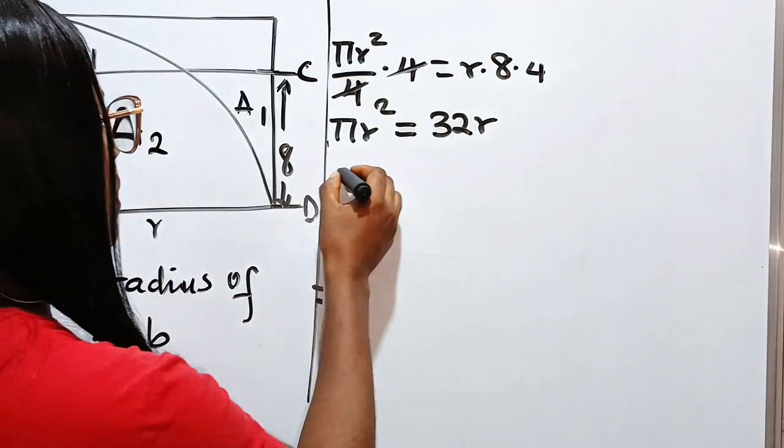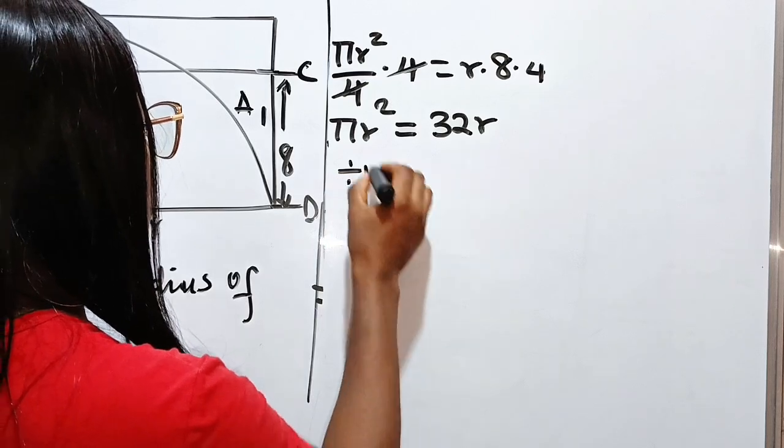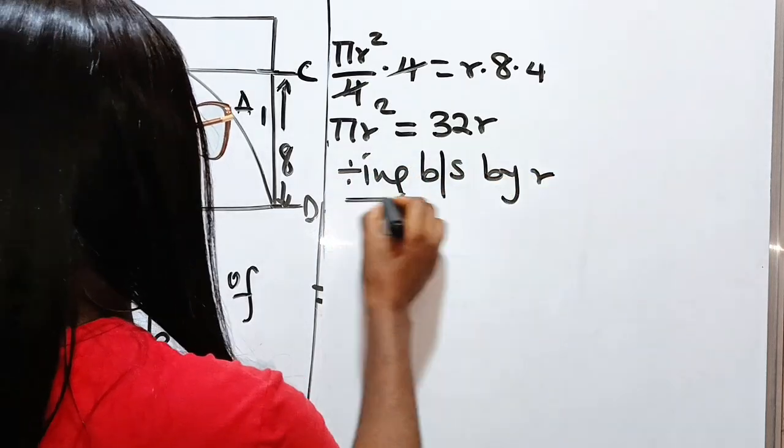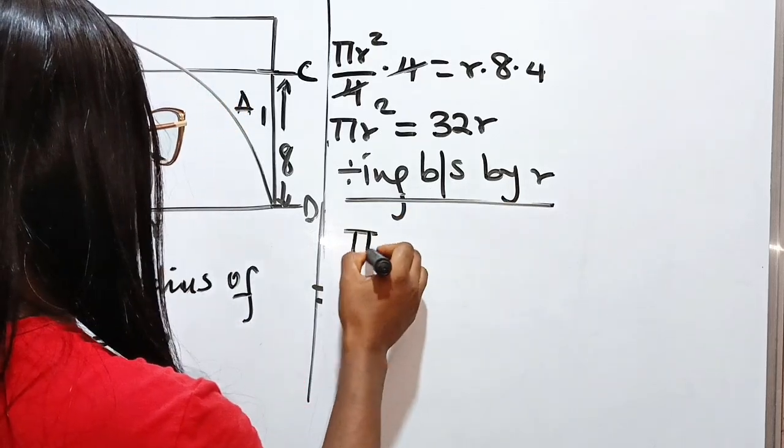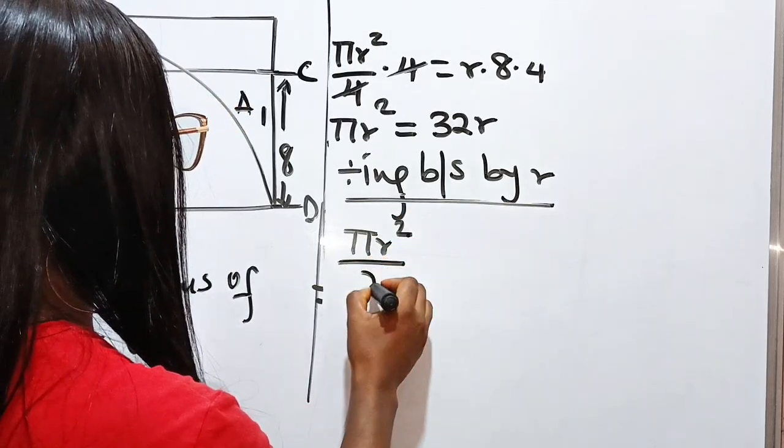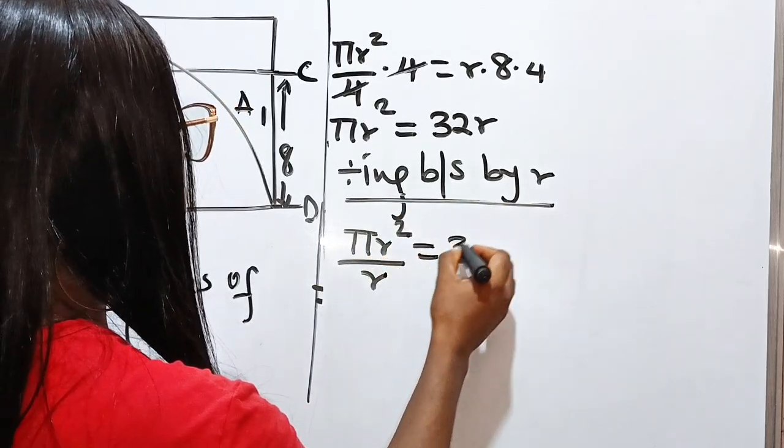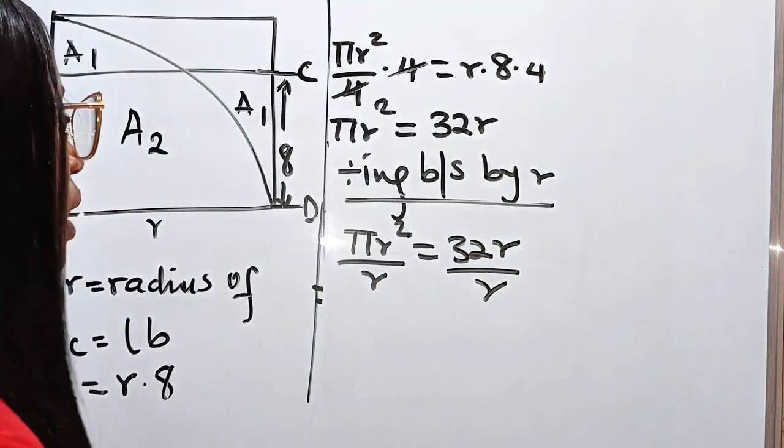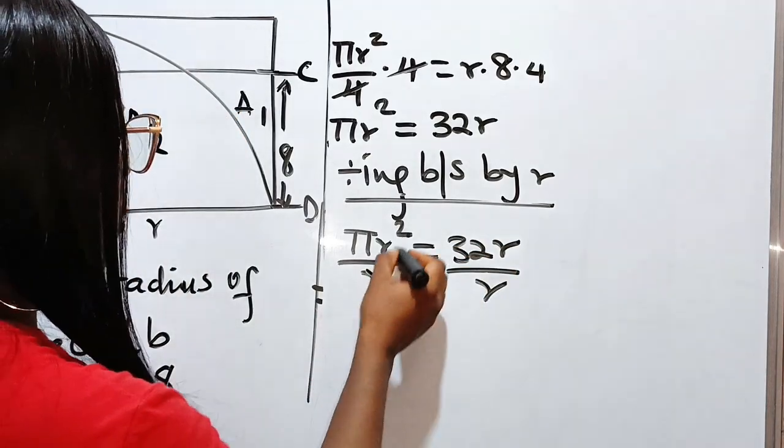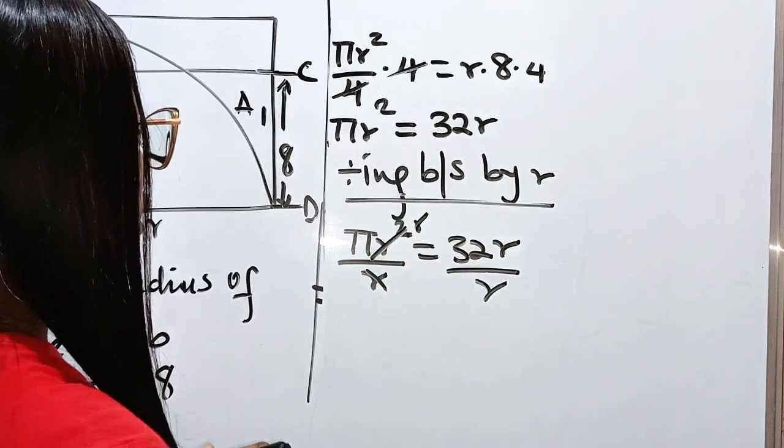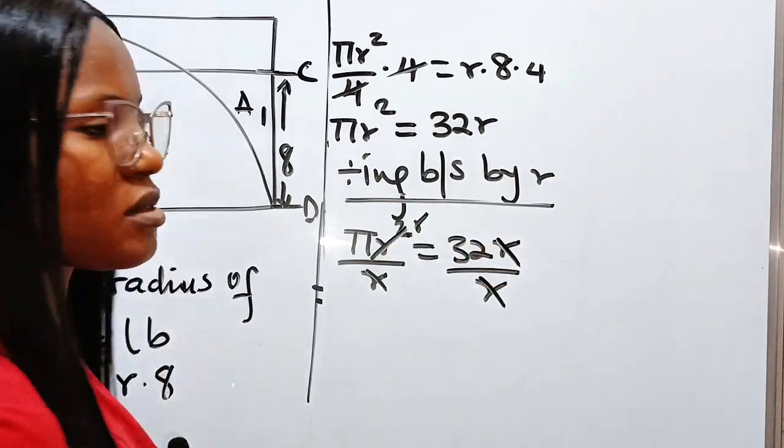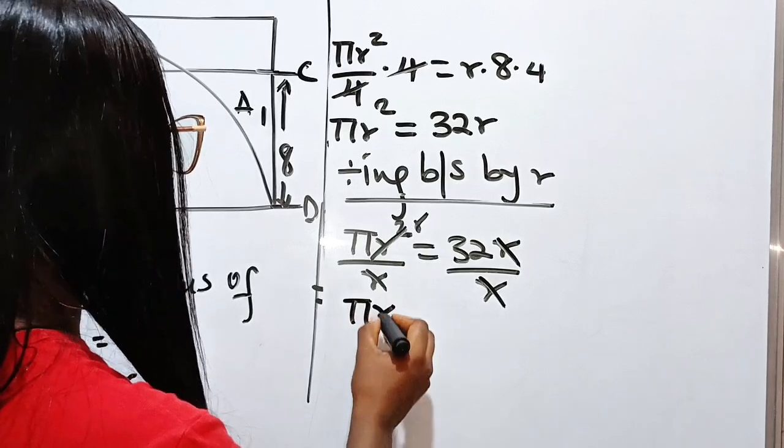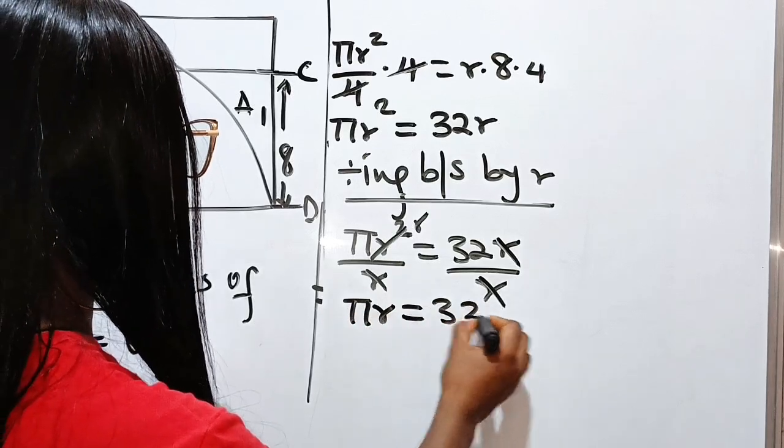Now, let's divide both sides. Dividing both sides by r. So we have pi r squared divided by r is equal to 32 r divided by r. When this divides this, one r remains. And when this divides this, nothing will remain. So we have pi multiplied by r is equal to 32.